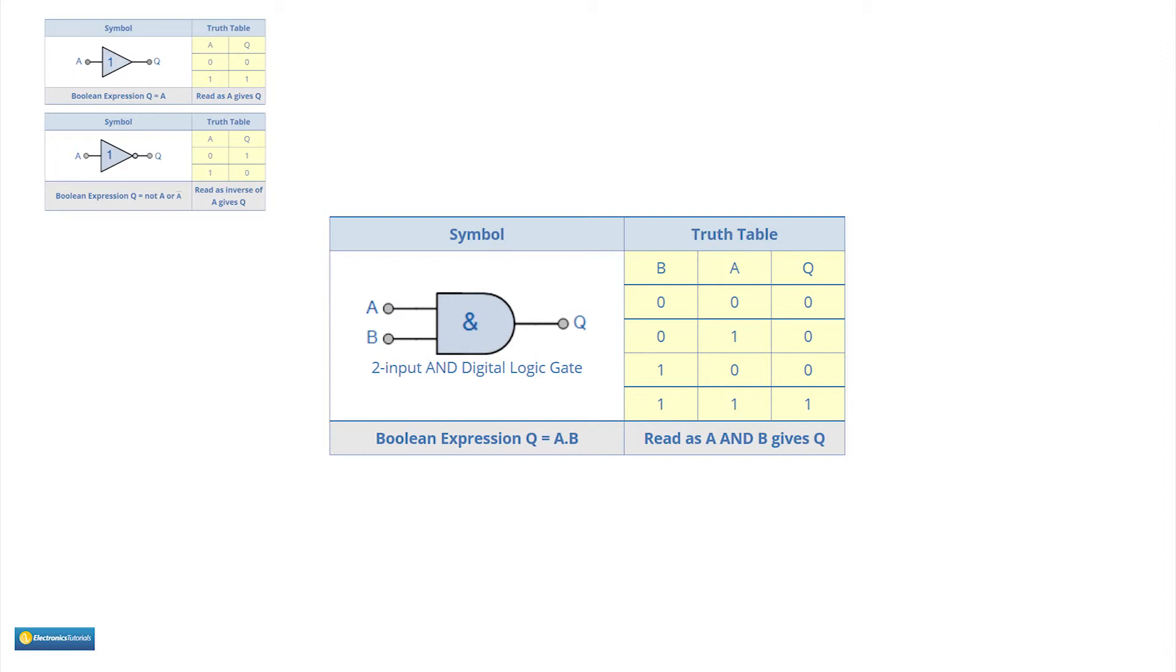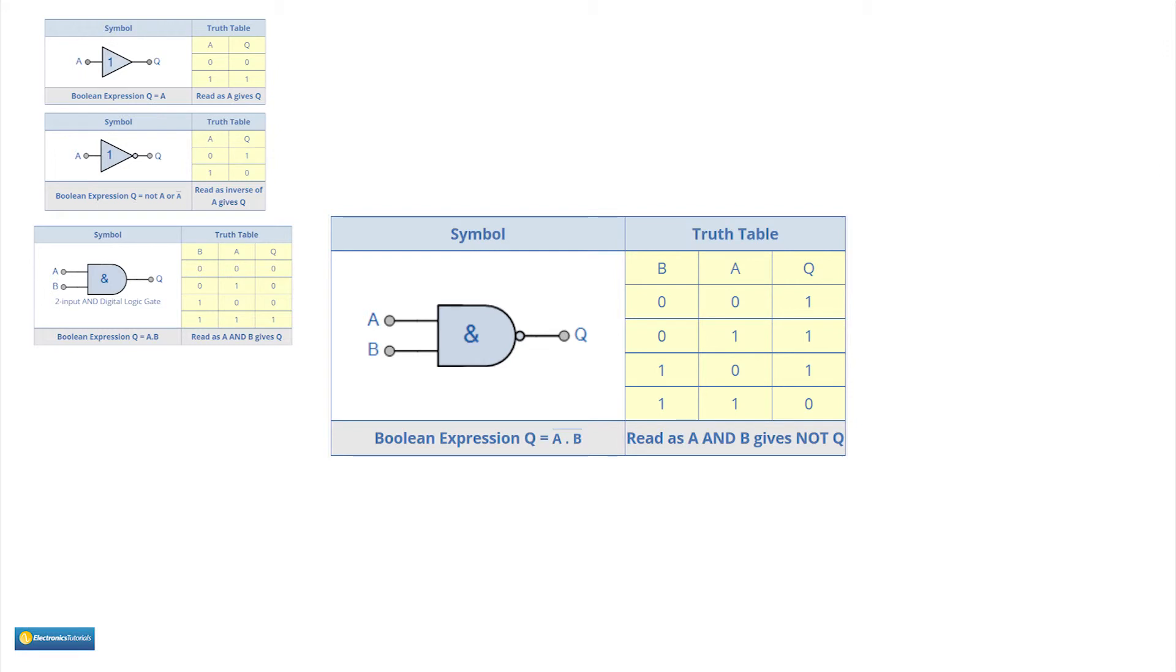Combine an AND gate with an inverter or NOT gate to give a NAND gate. The N meaning NOT. The truth table is shown here.